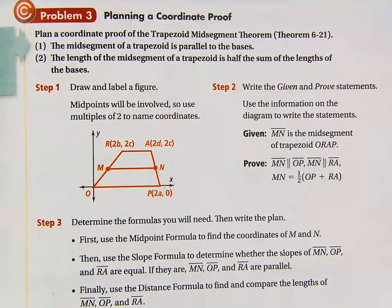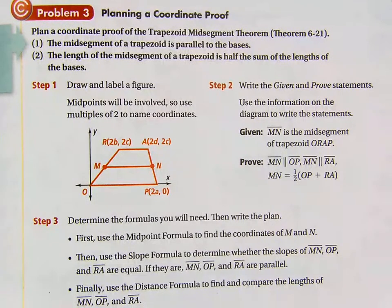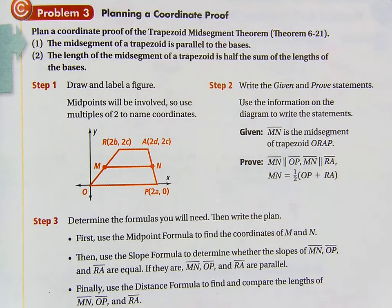We're not doing the proof itself, we're just planning it. The next section in the book is actually doing the proof. So on this first one, problem three says 'planning a coordinate proof': plan a coordinate proof for the trapezoid midsegment theorem. The trapezoid midsegment theorem says the midsegment of a trapezoid —